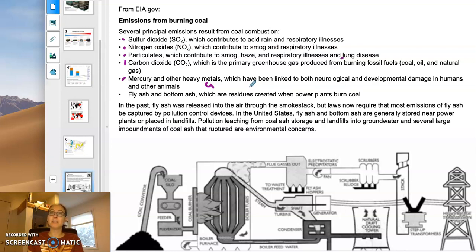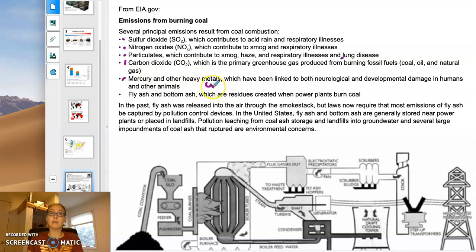But because we're burning so much all the time, these are actually really big problems. Coal production and combustion are a major source of the mercury in the environment, as well as uranium and other heavy metals that get into the air and then into the rest of the environment.